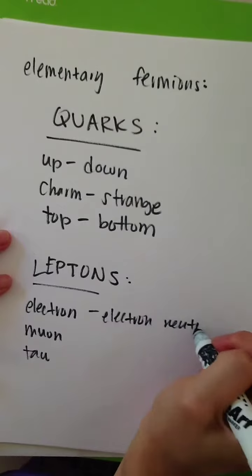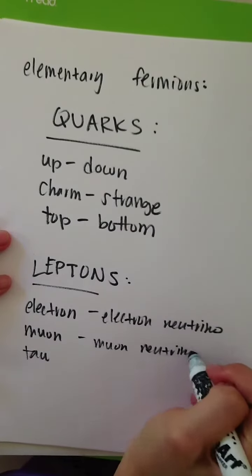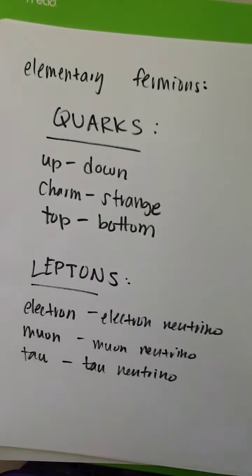The six leptons are the electron, muon, and tau, which all have negative one charges, and their respective neutrinos, which are all neutral. Leptons are solitary particles.